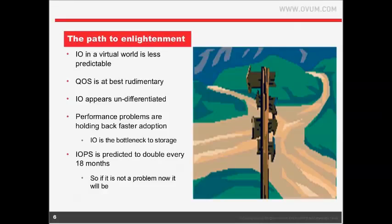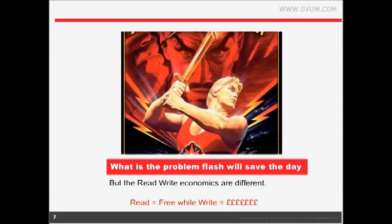Some people will say they don't have an IO problem today. The challenge is that IOPs are doubling every 18 months. You may not have an issue today, but in 18 months can your infrastructure cope with a doubling of IOPs? If you don't have that problem today, take the time to think about how you'll resolve it. If you do have the problem today, then listen to how you can possibly solve it quickly and easily.